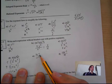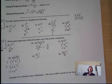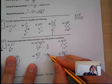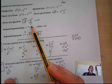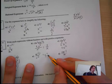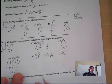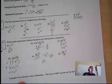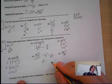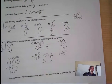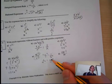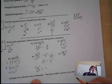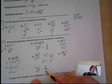We're going to have 5x to the negative 3 multiplied by x to the negative 2. We have two negative exponents. Using the integral rule, we take the reciprocal: 5x to the negative 3 becomes 5 over x to the 3. And x to the negative 2 on the bottom becomes x squared on top. Combining these, we get 5x squared all over x to the 3.